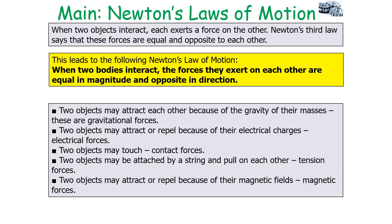For example, two objects may attract each other because of the gravity of their masses — these are gravitational forces. Two objects may attract or repel each other because of their electrical charges — these are electrical forces. Two objects may be touching each other, providing contact forces. Two objects may be attached by a string and pull on each other — these are tension forces. And two objects may attract or repel because of their magnetic field — these are magnetic forces.